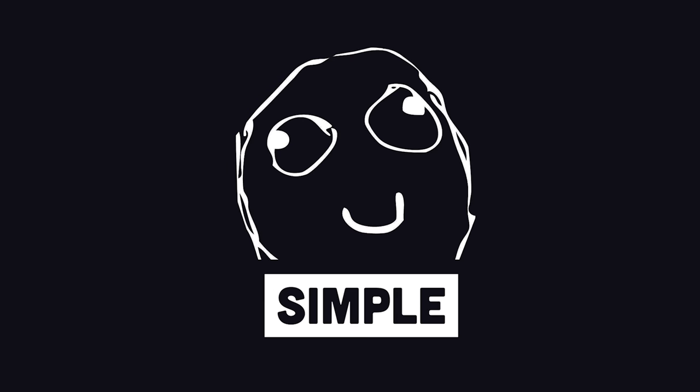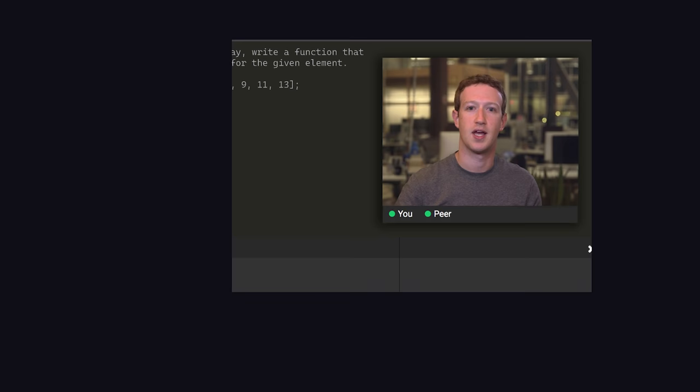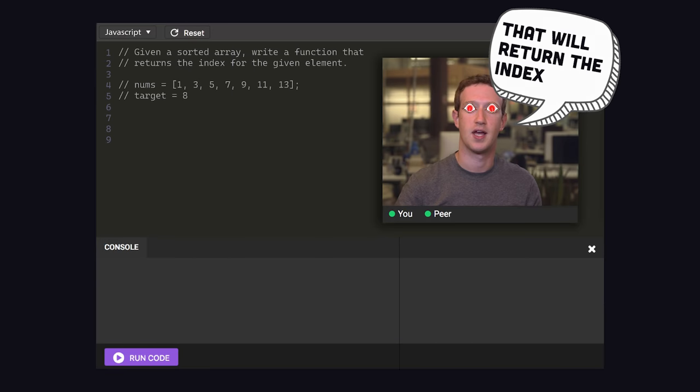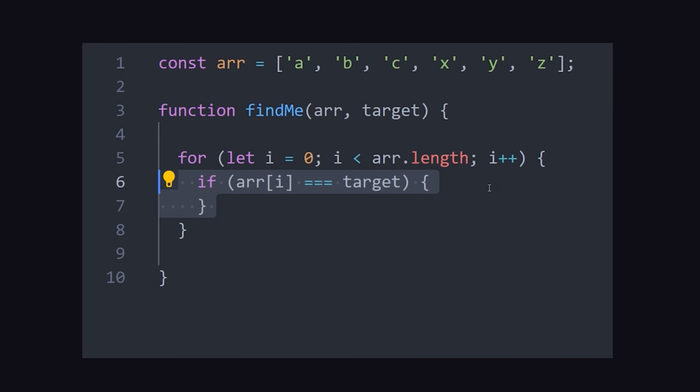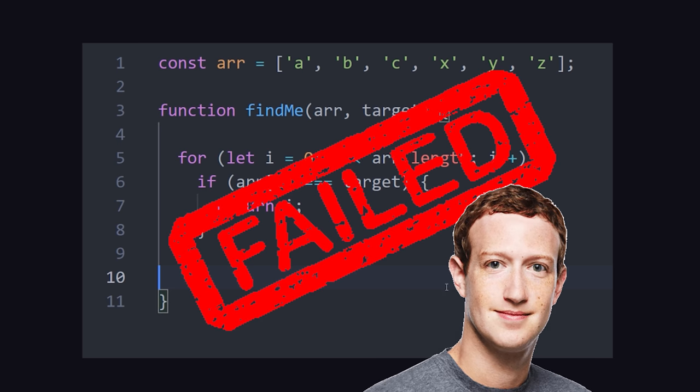Easy enough, now it's time for your technical interview. You might be given a question, like, given a sorted array, write a function that returns the index for the given element. The easy way to solve that problem is with a simple for loop. Just loop over every element in the array until you find the one you're looking for. That works, but you fail the interview because you need to go faster.